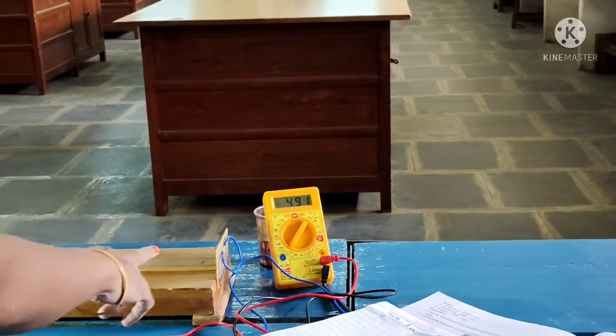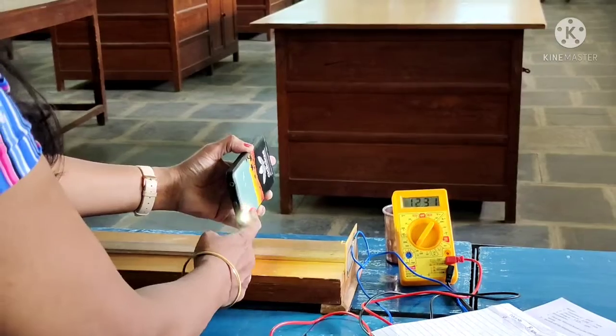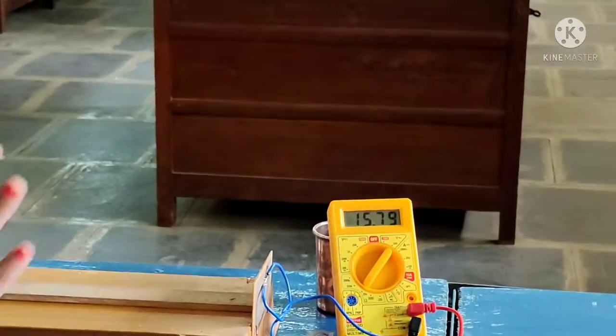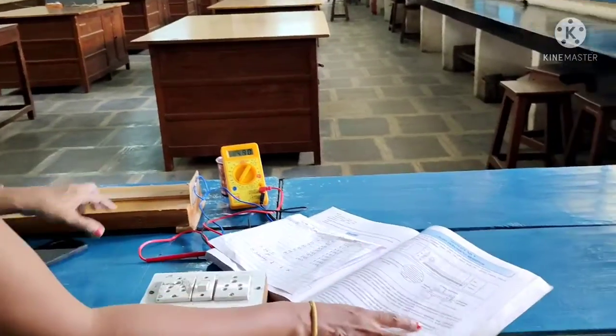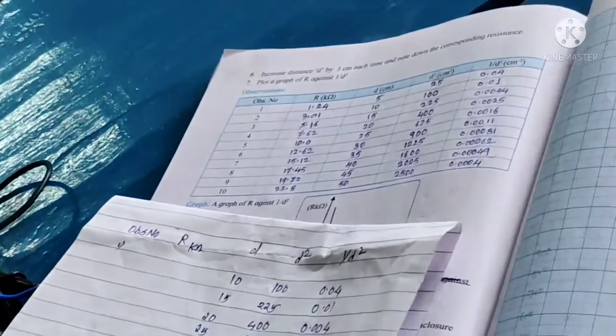Here in this activity, apparatus used: LDR filament lamp, then meter scale, this one is a meter scale, then light source, and here digital multimeter, this one is digital multimeter.